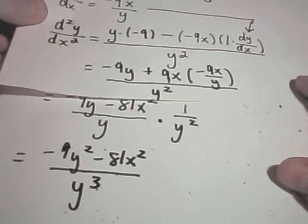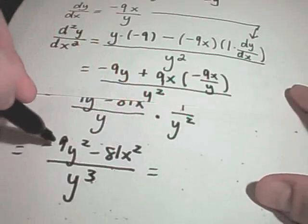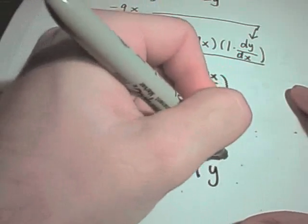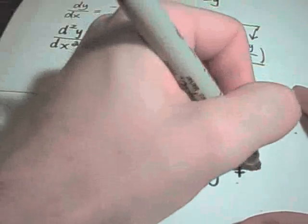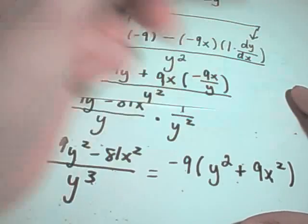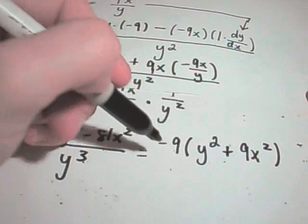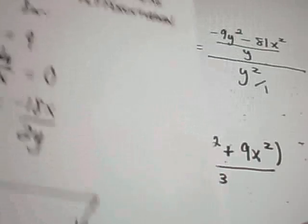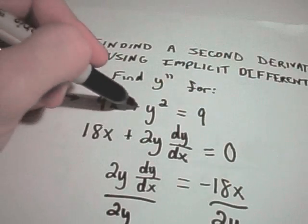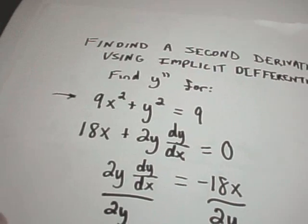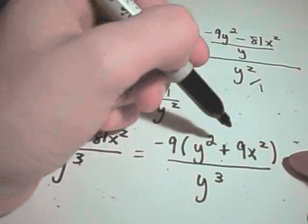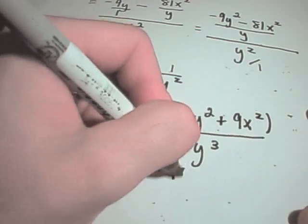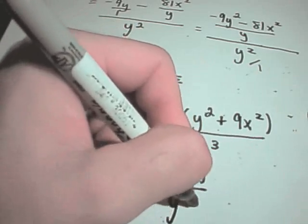So I'm going to clean up, or I'm going to factor out a negative 9 in the top part of my fraction. I've got negative 9, then I'll have y squared plus 9x squared, if I factor the negative 9 out, over y cubed. And this y squared plus 9x squared is, in fact, what we started with. 9x squared plus y squared is equivalent to 9, is equal to 9. So I'm going to replace my 9x squared plus y squared with 9. So I'm replacing that with 9 over y cubed.